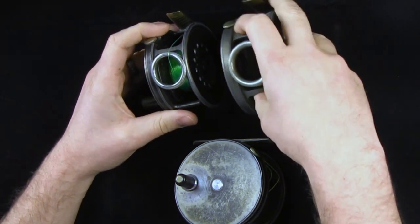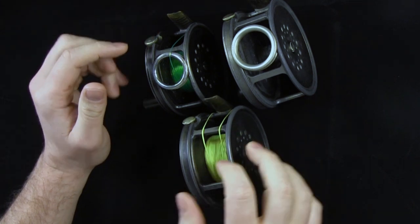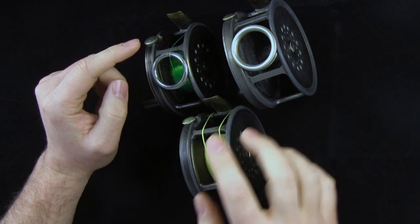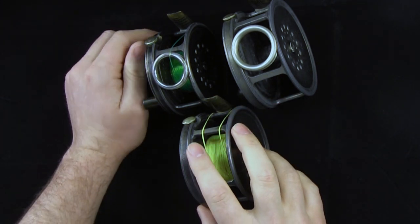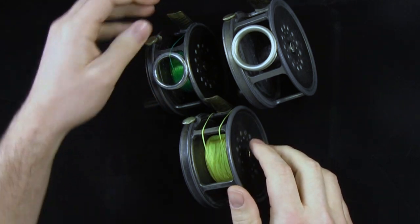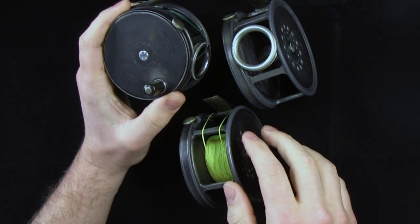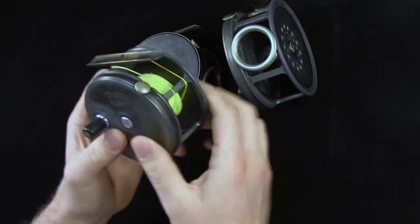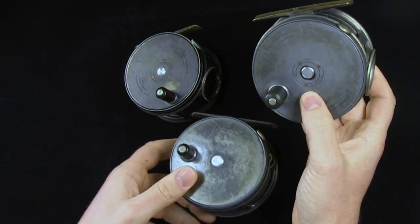You'll also see a difference where you have line guards. The three and a half has a line guard, the four inch has a line guard, but the three and three quarters does not. You can start to see that the feet are a little bit different. This reel being a little bit newer has an actual ribbed brass foot, while these two other reels have smooth brass feet.